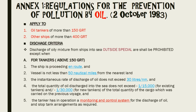Annexure 1 - regulation for the prevention of pollution by oil, dated 2 October 1983. This annexure applies to oil tankers of more than 150 GRT and other ships of more than 400 GRT. Under this annexure, the most important point is the discharge criteria, which is listed under two categories: outside the special area and inside the special area.